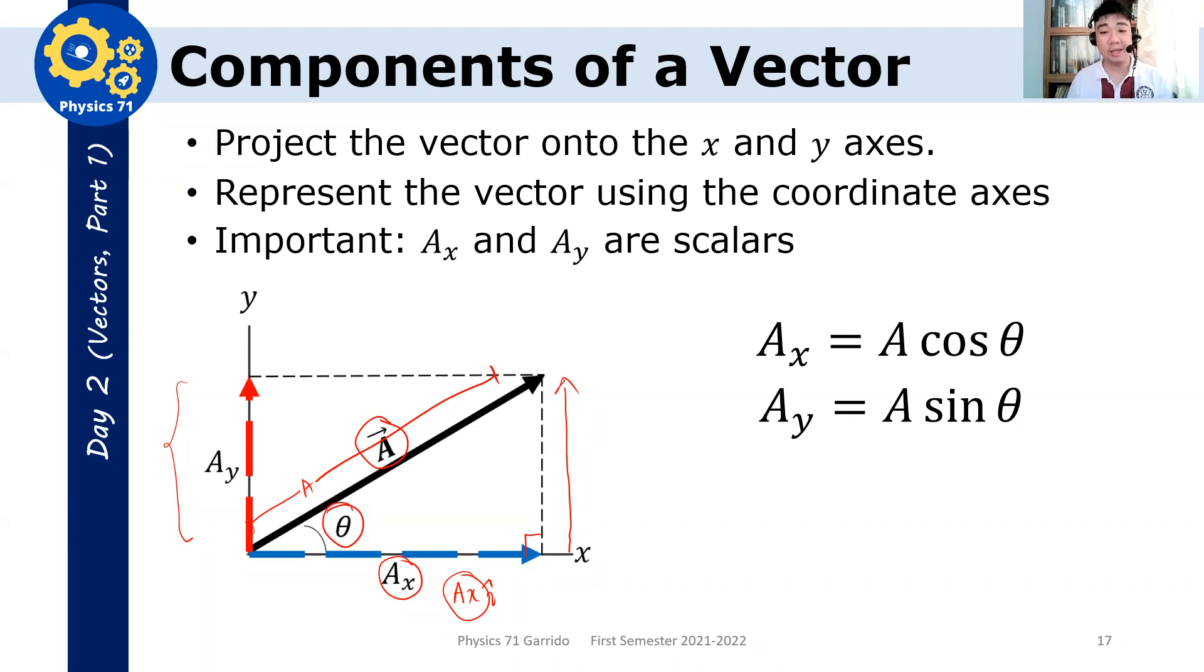And ax and ay can be related to the magnitude of a using your Pythagorean theorem. And hence, our vector, a vector now, can be represented as, can be written as ax i-hat plus ay j-hat. Here's an important thing. ax and ay are scalars. The actual vector is ax i-hat and ay j-hat. This is the vector, but this is the magnitude.